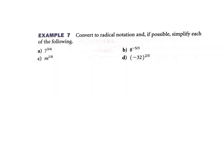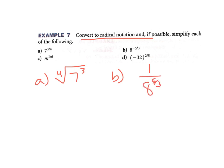Let's do a couple. Convert to radical notation and, if possible, simplify. Part A: because 4 is in the denominator, it's the root, and 3 is the power — so it's just the fourth root of seven cubed. Part B is negative, so I flip it, which gives 1 over the cube root of 8 to the 5th power. The cube root of 8 is 2 to the 5th power, which is 32. So that worked out really well. Part C: m to the one-sixth — the denominator is your root, so that's just the sixth root of m.